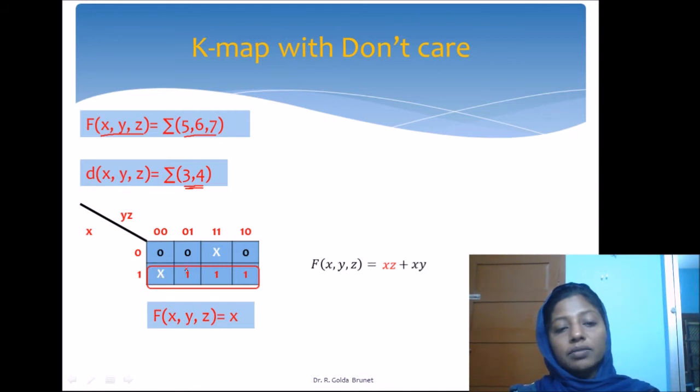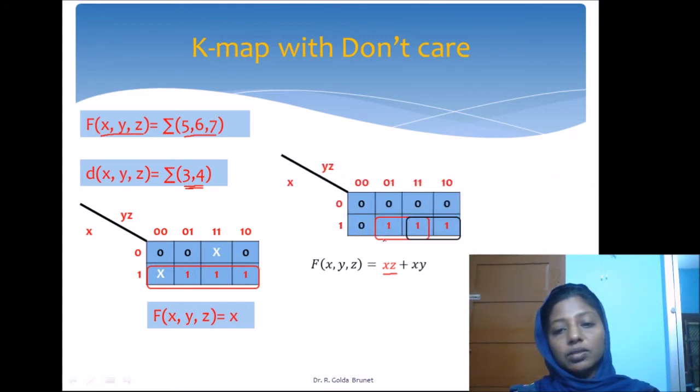If we don't have these don't care terms, then I can group these two 1's together and these two 1's together. These two 1's will be grouped, giving xz. These two 1's form another block, giving xy. How many gates will be necessary to implement this? One AND gate here, one AND gate here, and then finally one OR gate. Totally three gates.